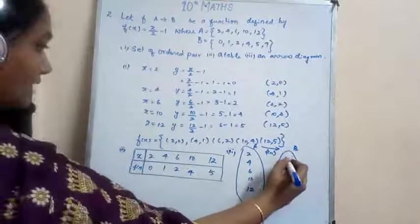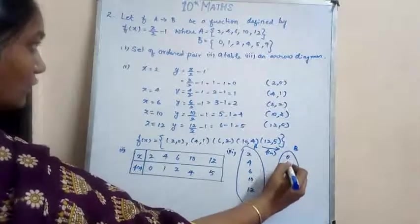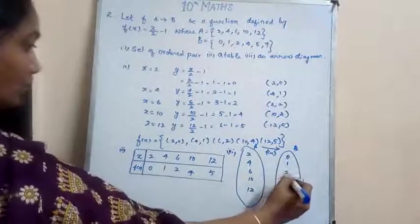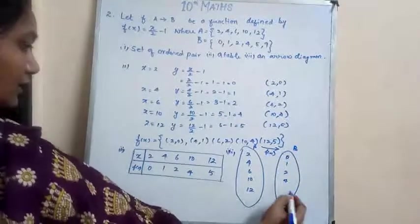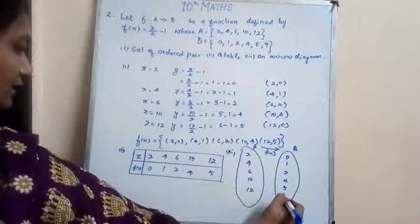Here elements of B. So 0, 1, 2, 4, 5, and 9.